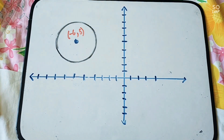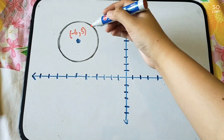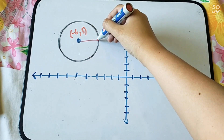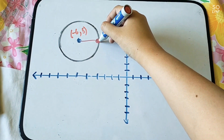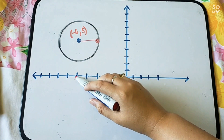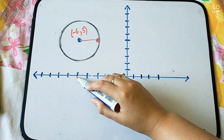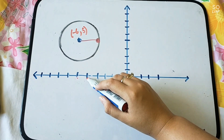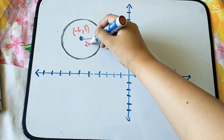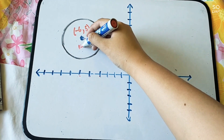That's your center. Now what is the radius? From the center, counting to the edge: 1, 2. Therefore the radius is 2 units. This is now your R.